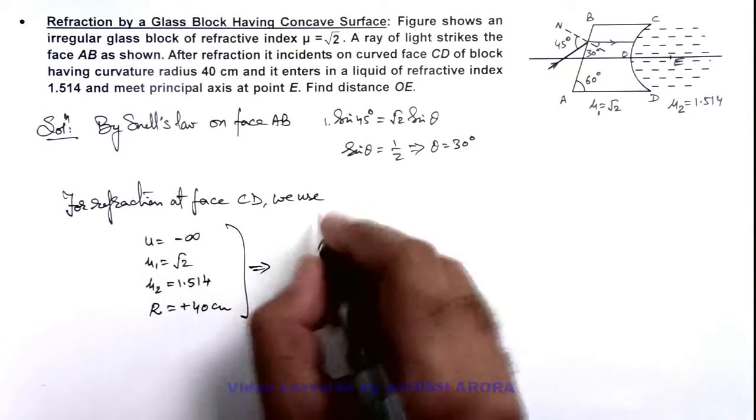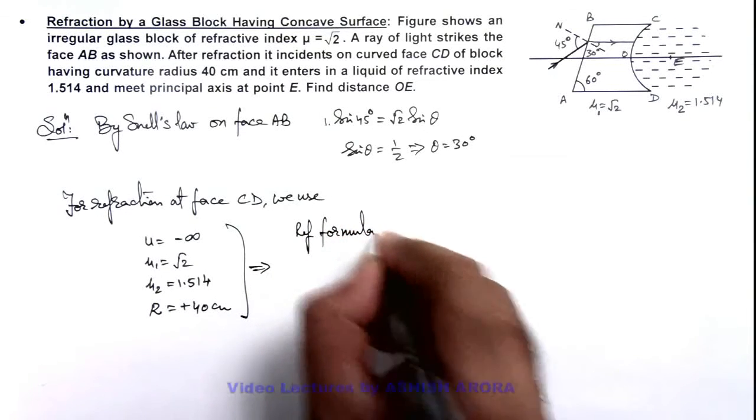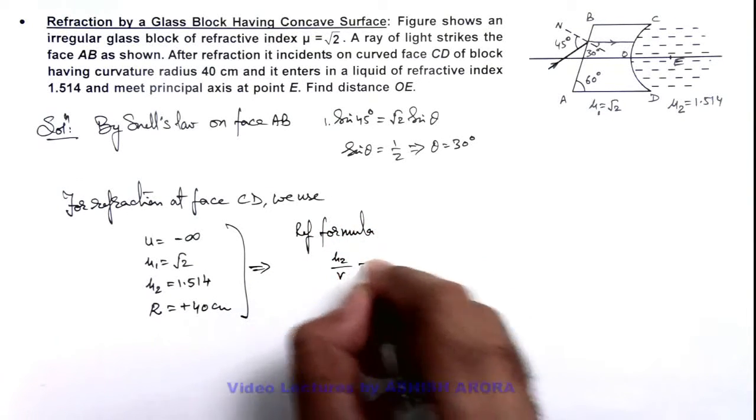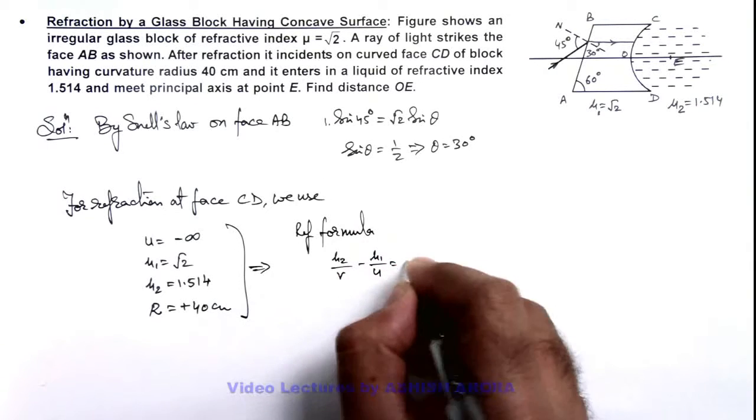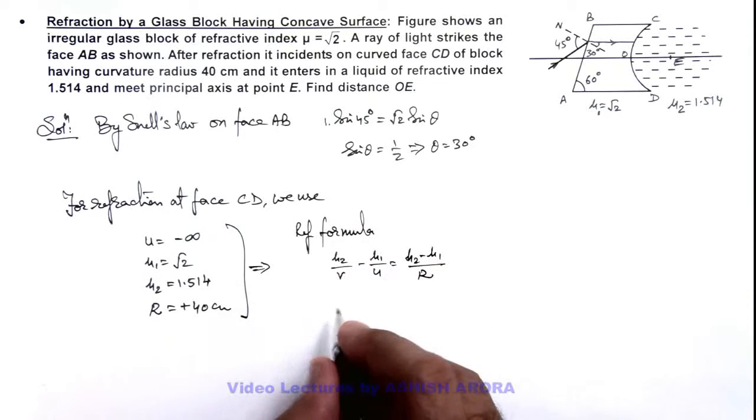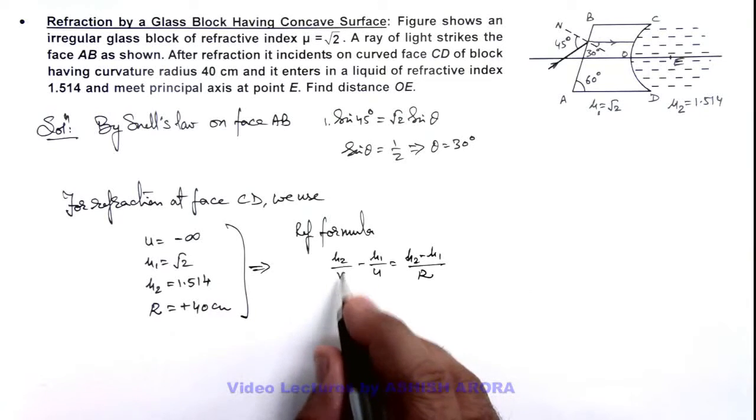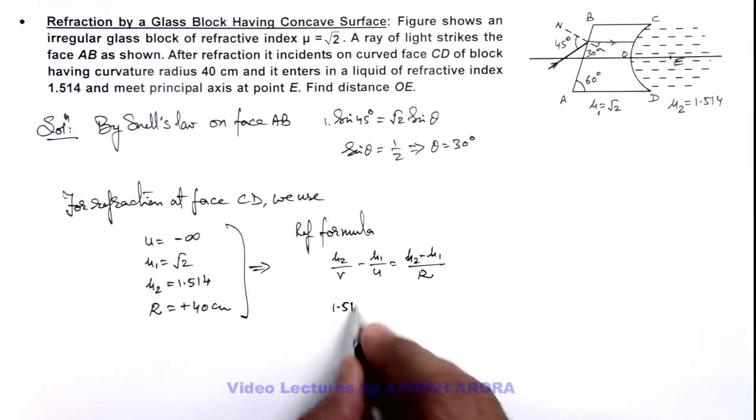And here we use this in the refraction formula as mu 2 by v minus mu 1 by u is equal to mu 2 minus mu 1 by r. So in this situation we are getting the result. After substituting the values, this is 1.514 by v.